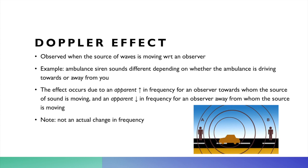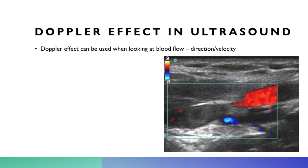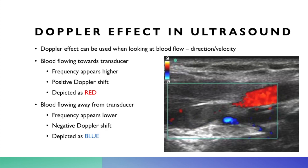One use of the Doppler effect in medical imaging is to look specifically at blood flow. Two pieces of information can be gained: the direction of fluid flow and the velocity. Of the two images — a blue and a red — the red image shows flow towards the transducer, because the frequency is higher, causing a positive Doppler shift. The blood moving away from the transducer is depicted as blue, as the frequency appears lower — a negative Doppler shift.